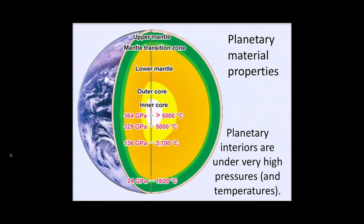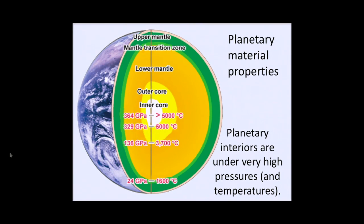In this part I'm going to talk more about planetary material properties — how we measure them and how we know what they are. The big problem here is that planetary interiors are under very high pressures and high temperatures; the weight of all the rock on top leads to these very high pressures. At the center of the Earth, we have pressures of 364 gigapascals — 3.64 million atmospheres — so far outside regular human experience. It's a big challenge to actually simulate those pressures and temperatures in the laboratory with physical experiments.